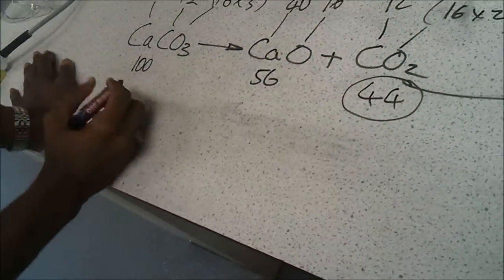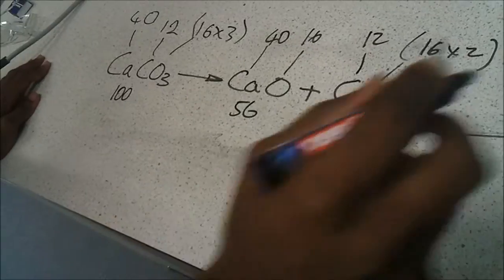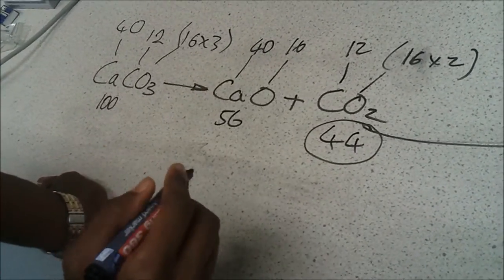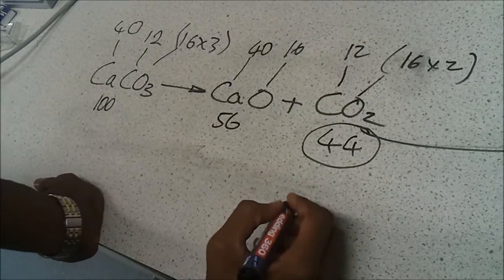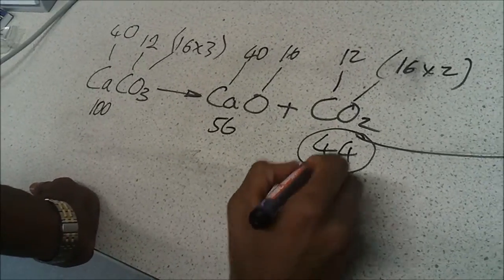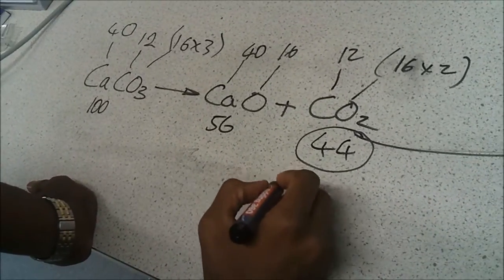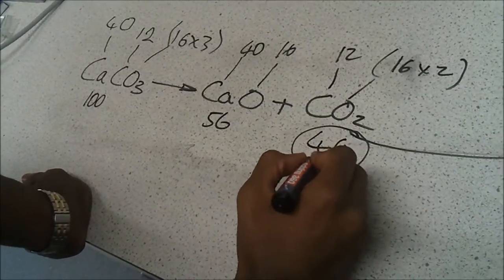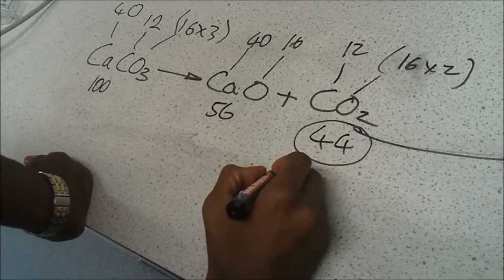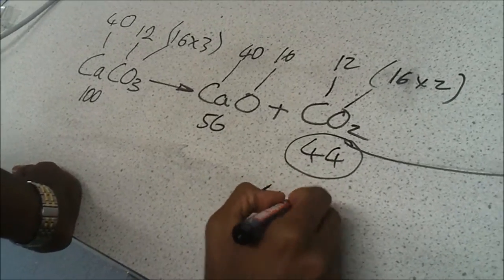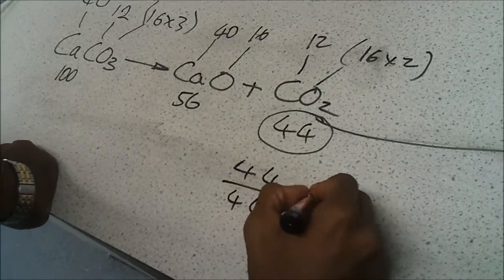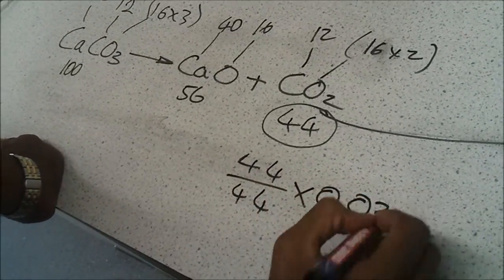And so what we're going to do here is we're actually going to calculate how much of this calcium carbonate has actually reacted. OK, so using that, we have to get this 44 to 0.03. And the way we do that is 44 divided by 44 multiplied by 0.03.